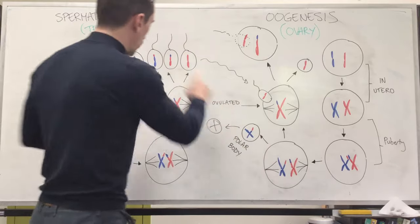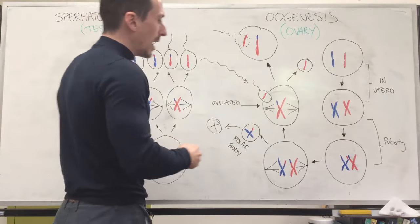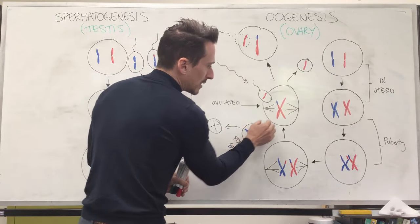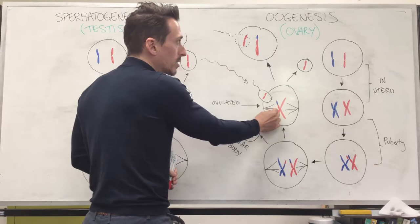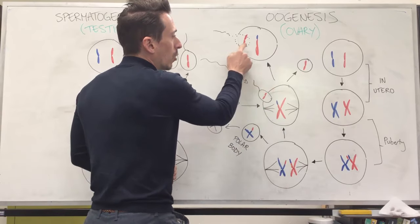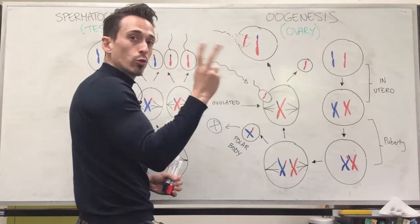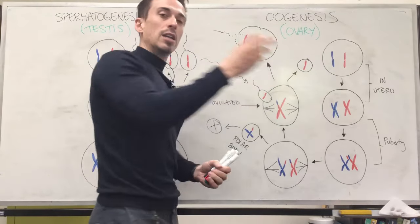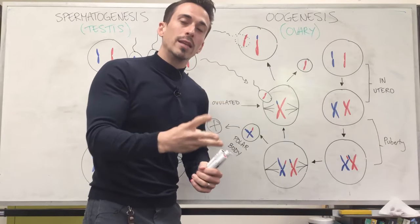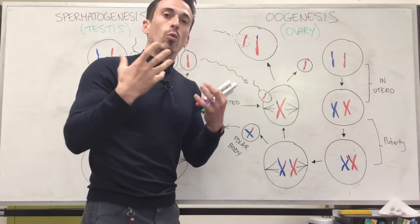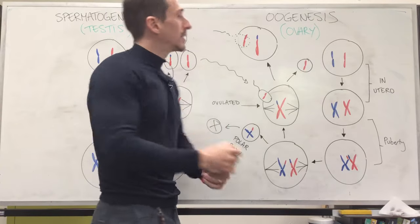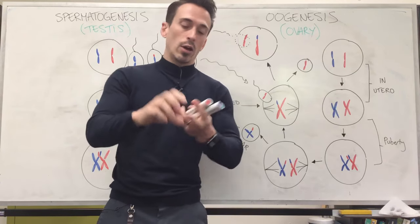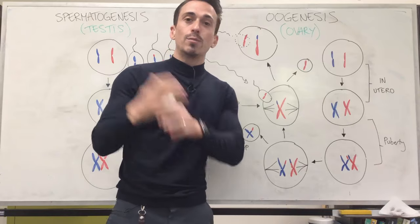Sometimes this process of splitting apart doesn't happen equally. When it splits, sometimes this polar body doesn't get anything — that's called non-disjunction. What could potentially happen is instead of having one chromosome one, you can actually get an additional chromosome accidentally pulled in, so you have three chromosomes. This is called a trisomy, and there are a couple of trisomy diseases — chromosomal number defects — including trisomy 21 which is Down syndrome, trisomy 18 which is Edwards syndrome, and also trisomy 13. So this is spermatogenesis and oogenesis.